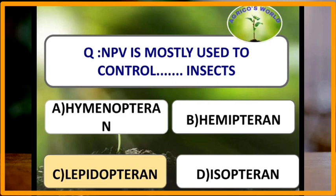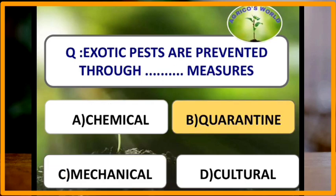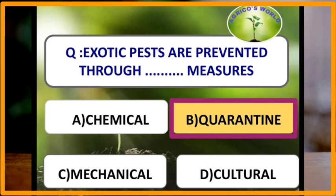NPV (nuclear polyhedrosis virus) is mostly used to control lepidopteran insects. Exotic pests are prevented through quarantine measures, which comes under legal control. Plant quarantine is a legal restriction to prevent the spread of pests from infested to uninfested areas by restricting the movement of infested stock.